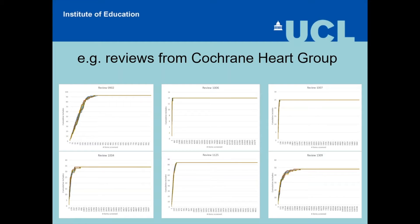For many reviews, we've found them much earlier than that. So potentially, as well as finding studies quickly, there's the opportunity to not screen all remaining citations. The danger when doing this in a live review is the unknown — not knowing whether you've really found everything, or if there's one that for some reason has been pushed towards the end and would only be found by manually screening everything.